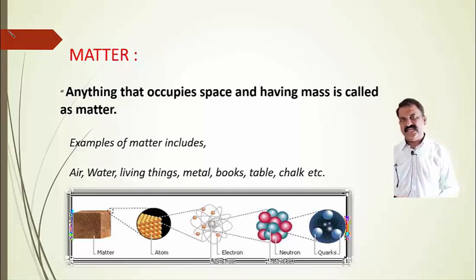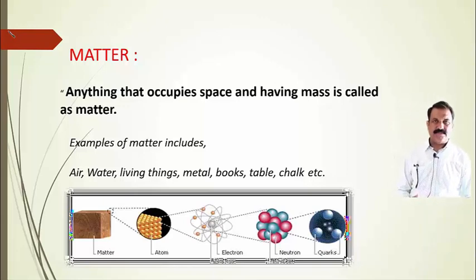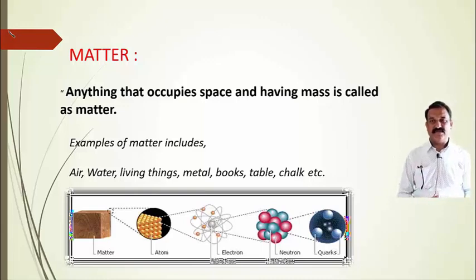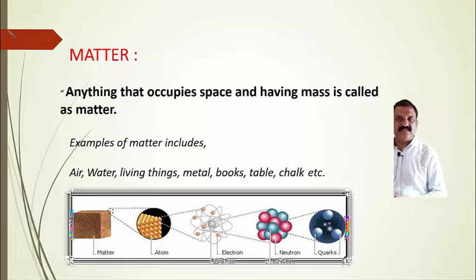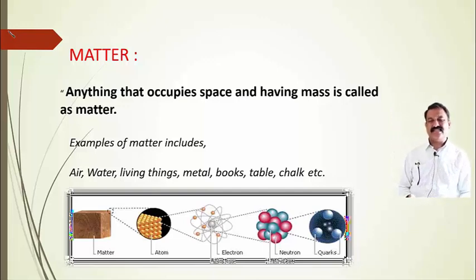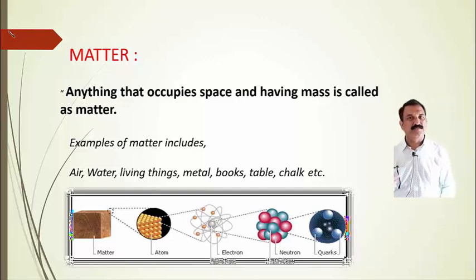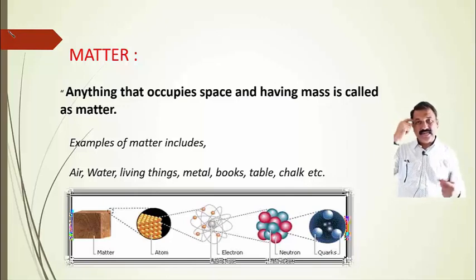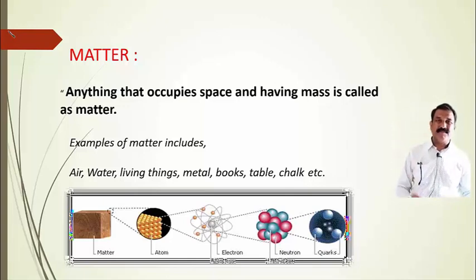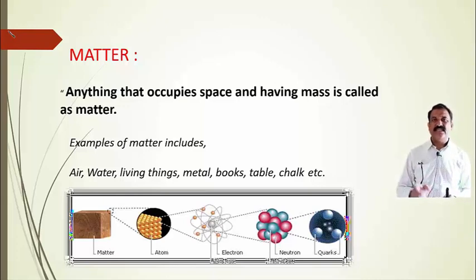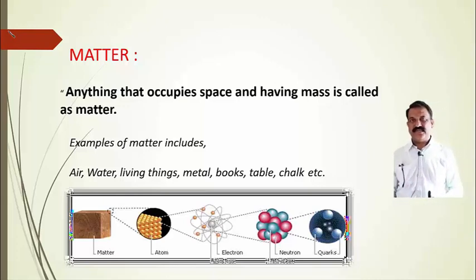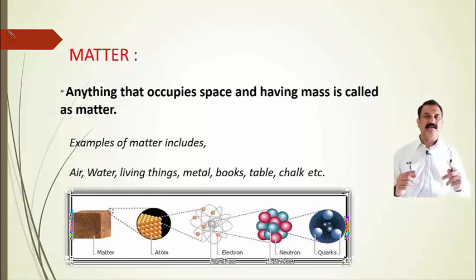For example, water requires some space and has a definite mass. All living things, this pen, keyboard, your metal, paint, book, table, chalk, fan — all of these are matter because they require some space and have a definite mass.